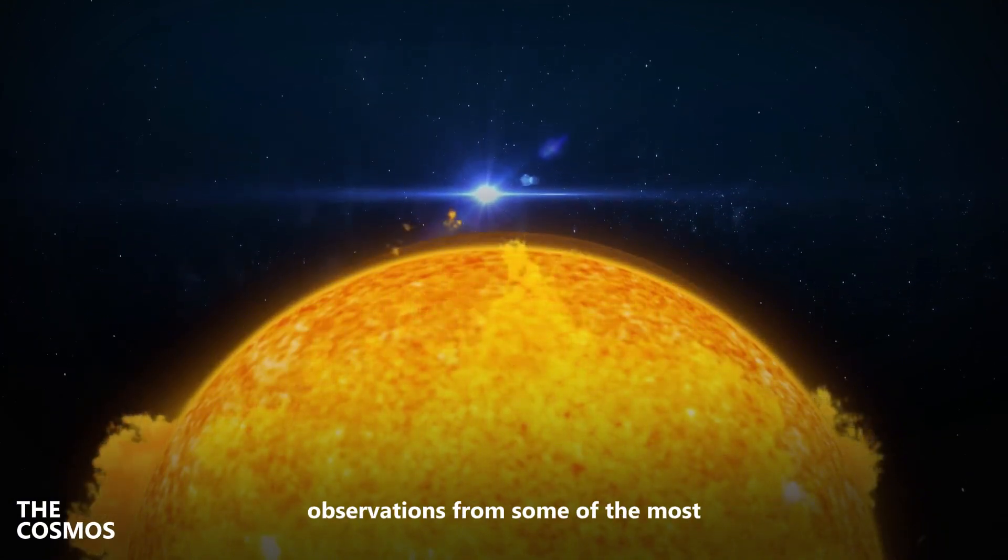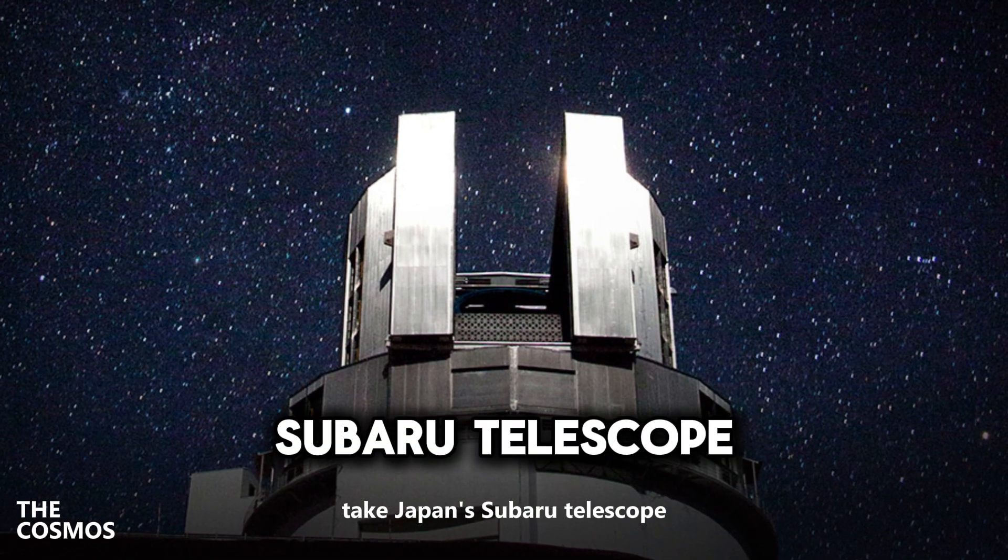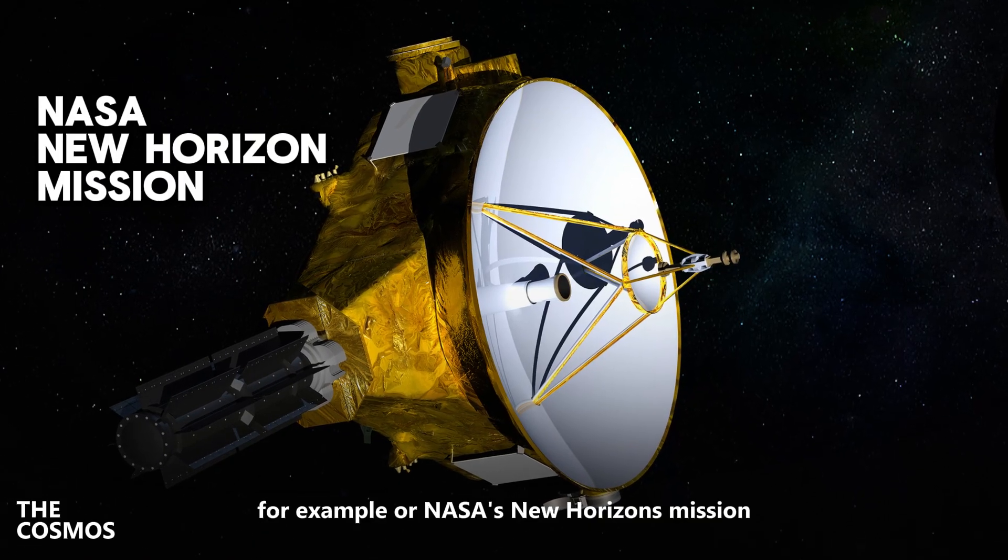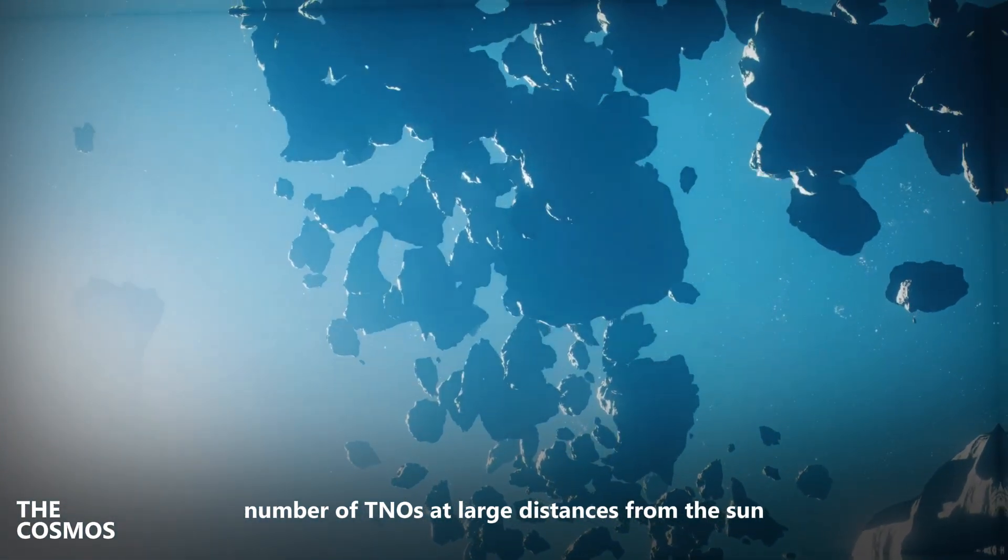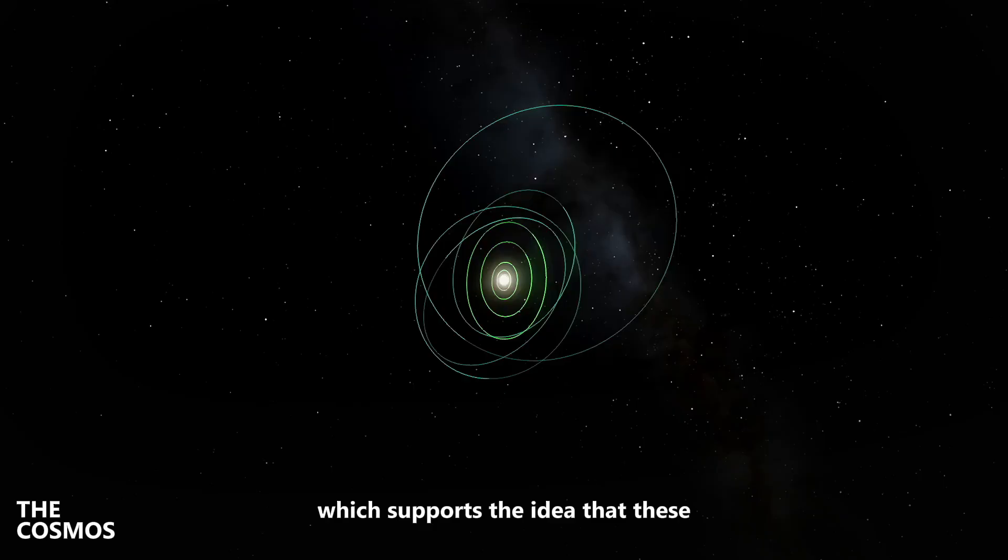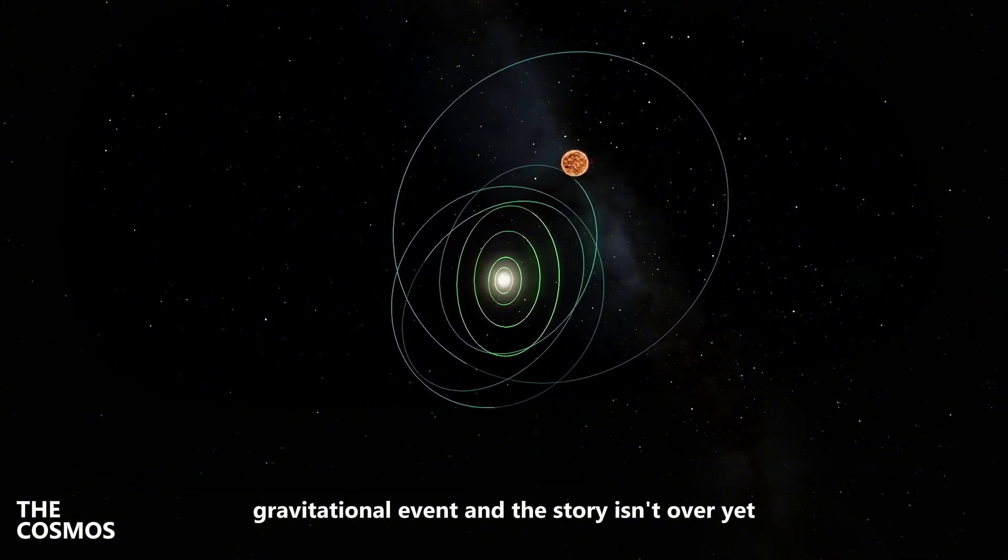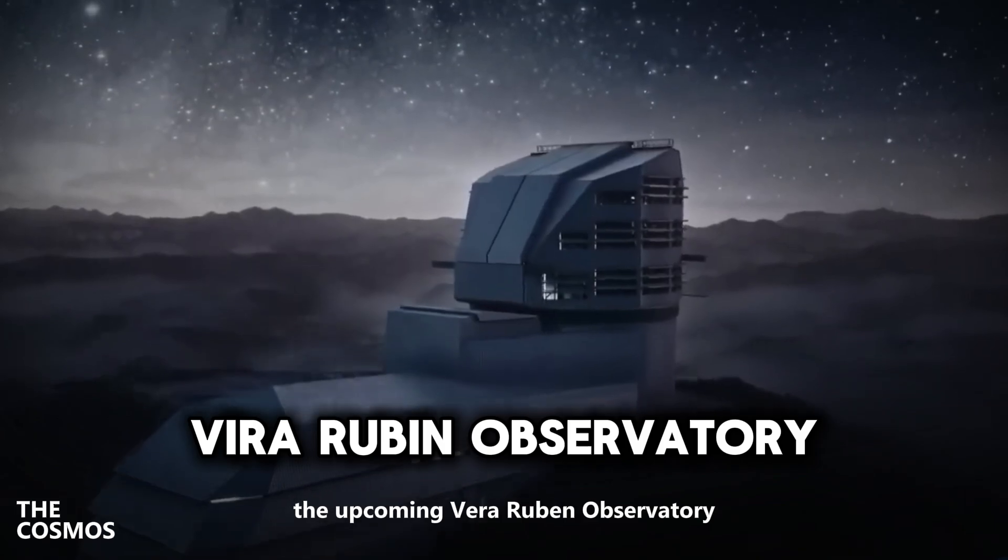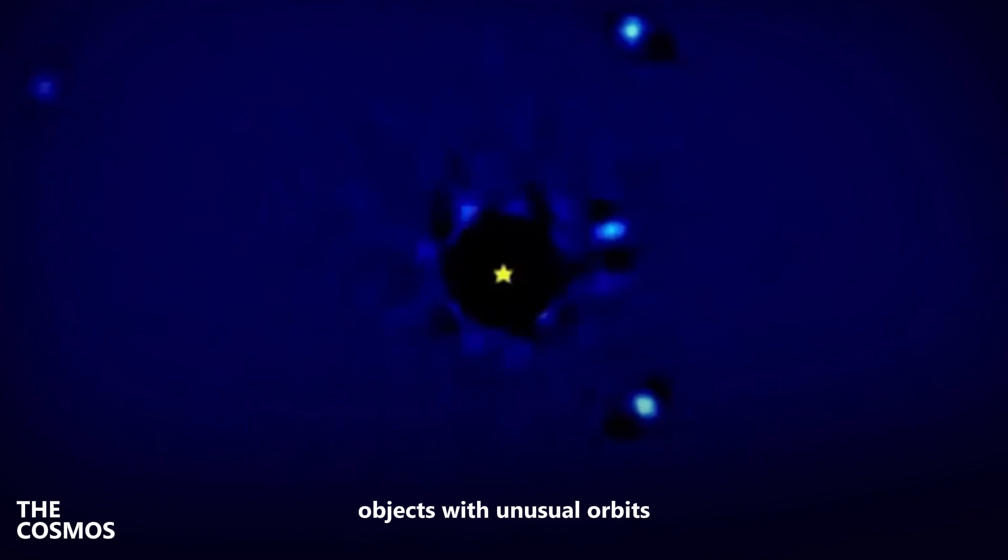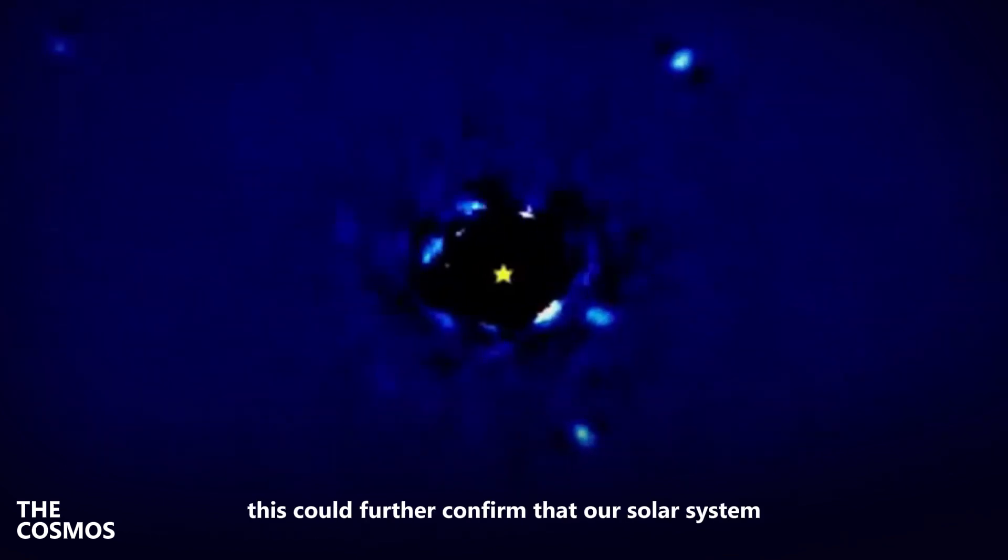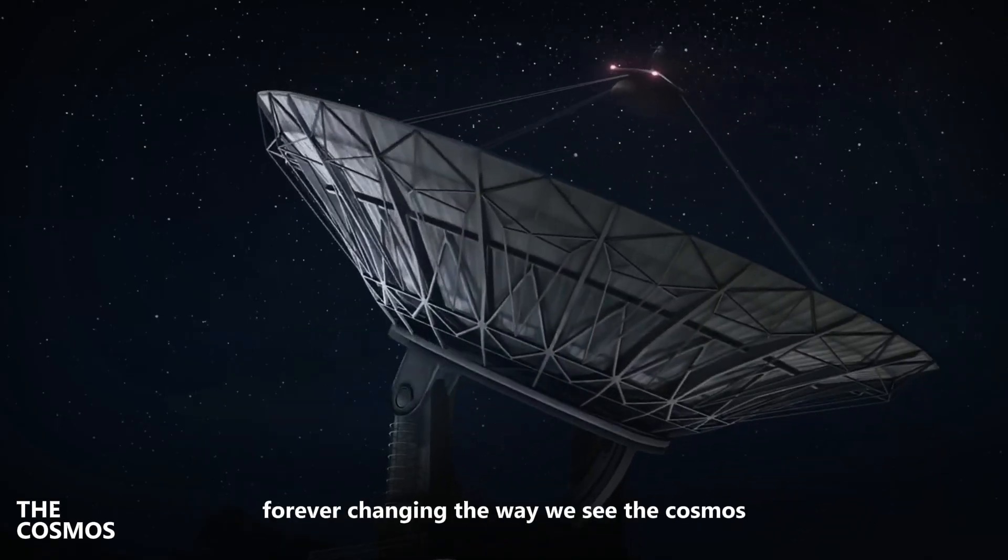What's even more fascinating is that this stellar flyby theory isn't just a wild idea. It's backed up by observations from some of the most advanced telescopes on Earth. Take Japan's Subaru Telescope, for example, or NASA's New Horizons mission. These tools have detected a surprisingly high number of TNOs at large distances from the sun, which supports the idea that these objects were scattered by a massive gravitational event. And the story isn't over yet. The upcoming Vera Rubin Observatory, set to start operations soon, is expected to uncover even more objects with unusual orbits. This could further confirm that our solar system had a close shave with a rogue star, forever changing the way we see the cosmos.